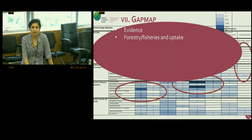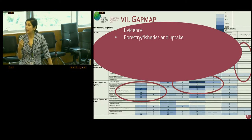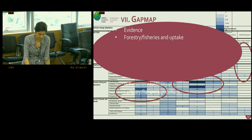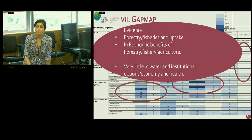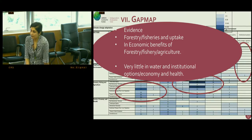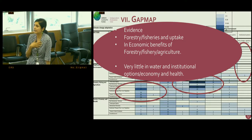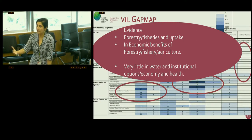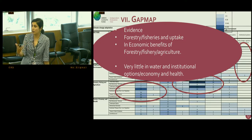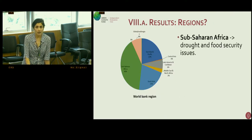To recap: forestry, fisheries, and agriculture, on uptake, showed the maximum incidence of evidence, as well as with respect to their economic benefits. But very little evidence was found in water, which was surprising, and in institutional options. Water actually surprised me a lot because it's an area where you can measure well and do a lot of good quantitative work.